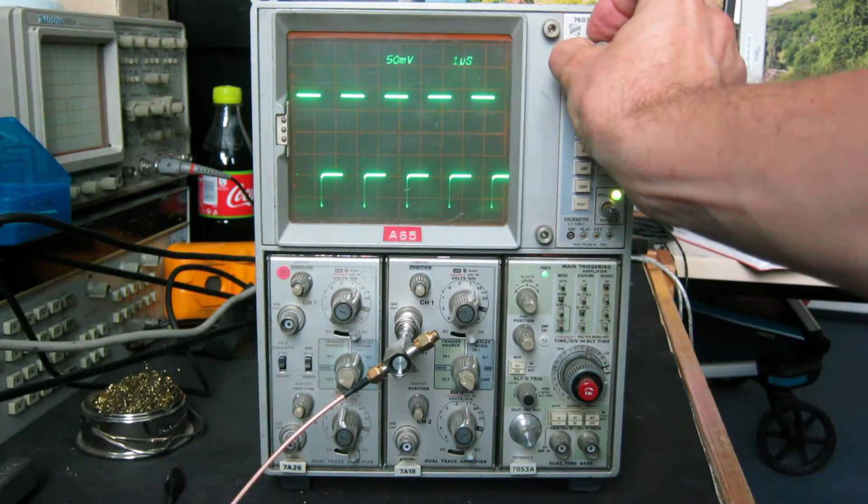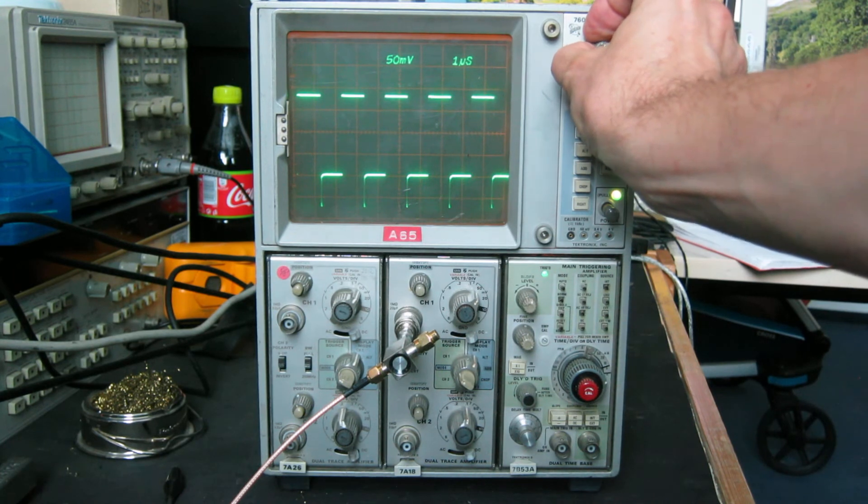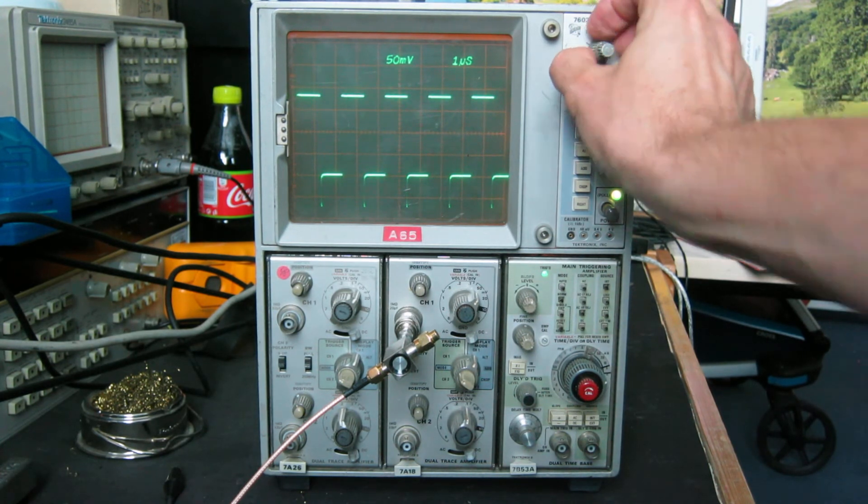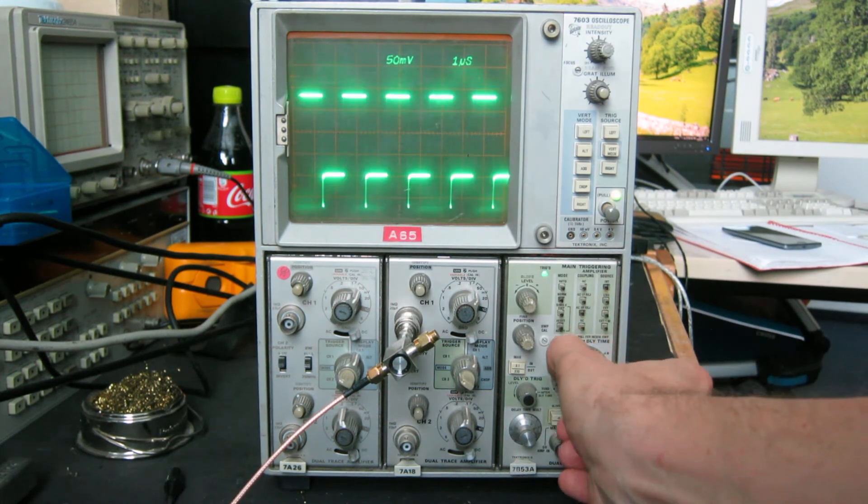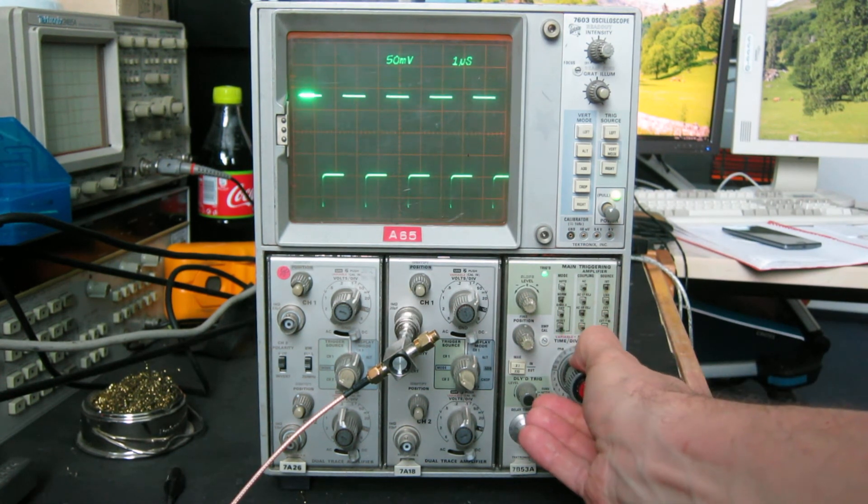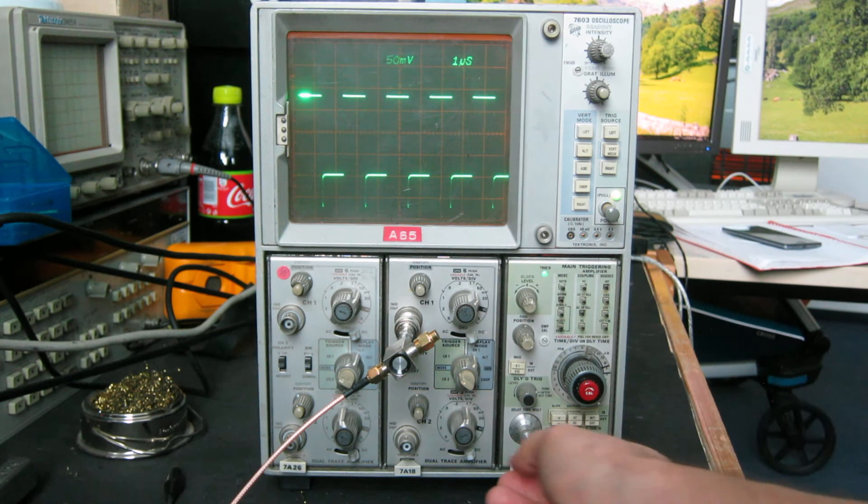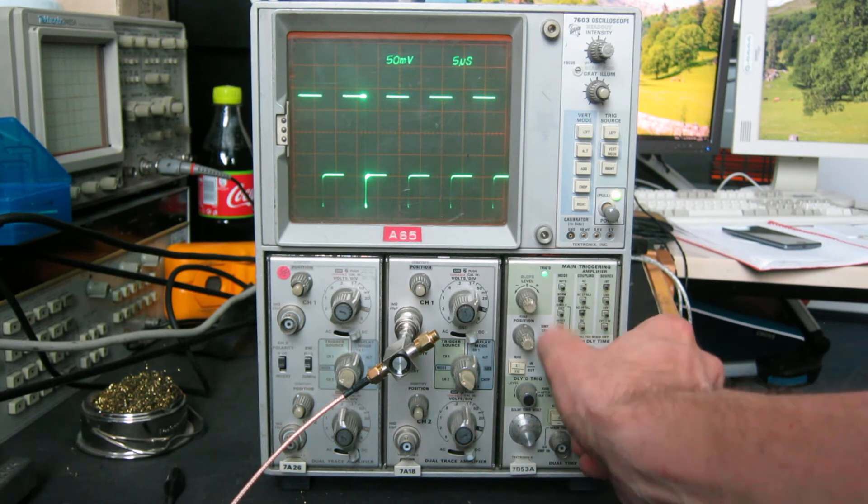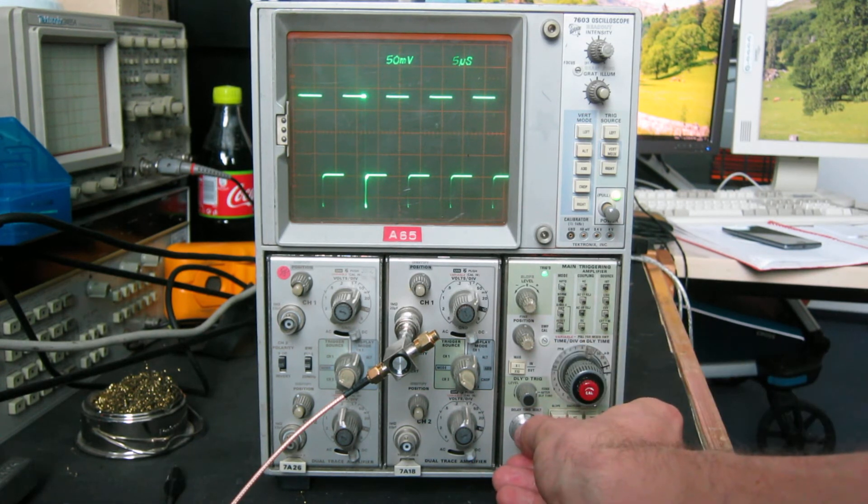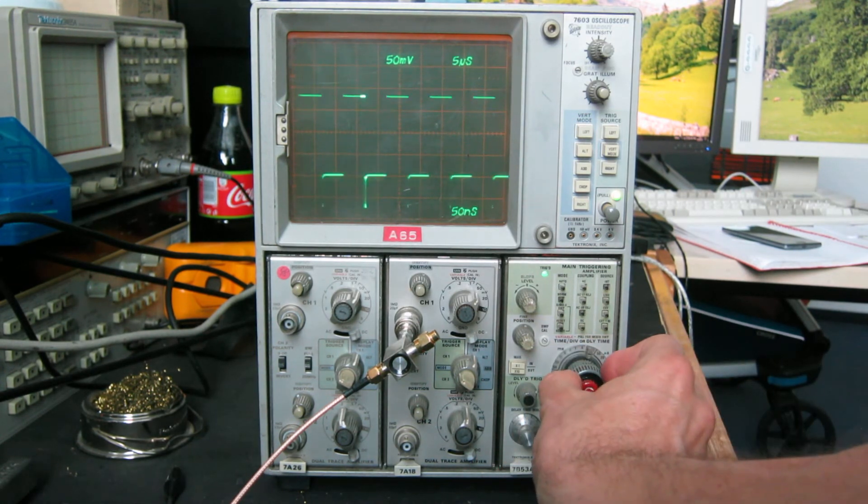We can see the pulse waveform from the pulse generator. If we wanted, for example, to examine one of these peaks here, we can use the delayed time base. I hope you can see the intensified portion of the trace and move the delay over to the peak we're interested in. Let's have that one there and choose a time base that covers it nicely and pop the knob back in.